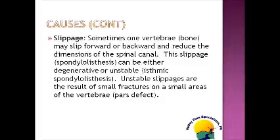Other causes of spinal stenosis include slippage of the spine, where one bone or vertebrae slips forward or backward on another. This slippage, called spondylolisthesis, can be either degenerative or traumatic. If the slippage is unstable, we call it isthmic spondylolisthesis; if it's stable, we call it degenerative spondylolisthesis. Unstable spondylolisthesis results from small fractures on an area of the spine called the pars — a pars defect or spondylolysis.